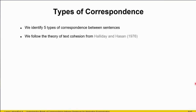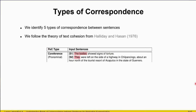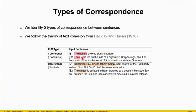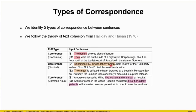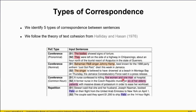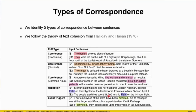We identify five different types of correspondence between sentences, based on the theory of text cohesion from a 1976 work by Halliday and Hassan. The first type is pronominal co-reference, where there is an entity with a mention in each sentence and one of those mentions is a pronoun. Next is nominal co-reference, where there are two entity mentions and one contains a name. Next is common noun co-reference, where both entity mentions do not contain a name or pronoun — just common nouns. Next is repetition, where both entity mentions are exactly the same string. Finally, event triggers, where both mentions represent the same event, which usually manifests as verbs.